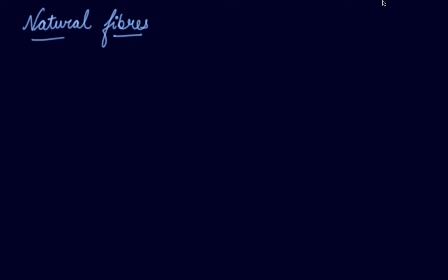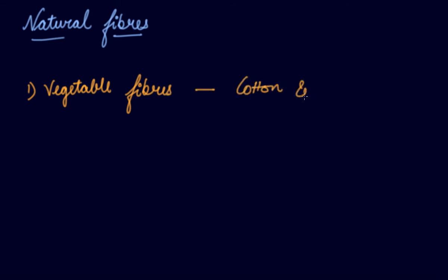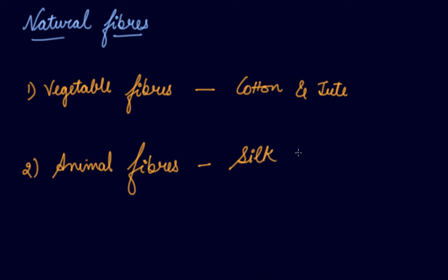Some fibers are available naturally and require certain processes before use. First are vegetable or plant fibers — cotton comes from the cotton plant, and jute is another example. Second are animal fibers — silk comes from the silkworm, and wool comes from sheep, goats, etc. These are the types of fibers available naturally. You can also consult the previous videos from your 6th standard to understand the full concept of fiber to fabric.